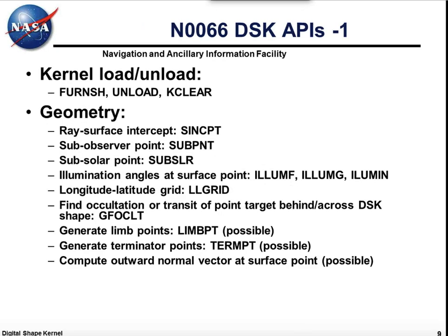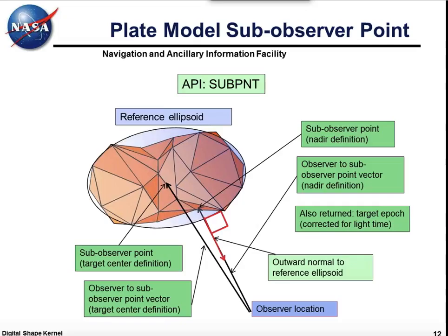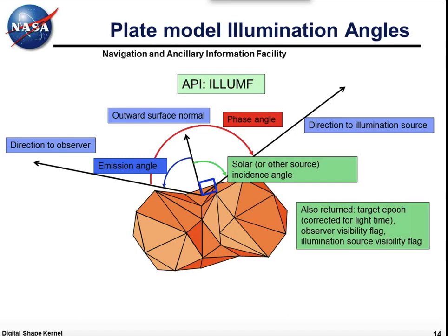I'm going to skip ahead to the kinds of computations that can be done with the DSK system. Plate model surface intercept — this is done by the SPICE subroutine Syncept. If you're a SPICE user, you're familiar with that routine. We're simply going to augment it so it can perform the same computations with an arbitrary shape. Plate model sub-observer point has two definitions available: one using a ray that goes to the center of the object, and another that drops a perpendicular onto a reference spheroid and uses that as the definition of the nadir direction. Subsolar point is analogous. Illumination angles are computed at a plate on the model.